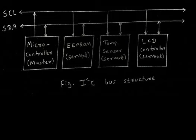I2C bus has two communication lines. One is serial data (SDA) line and the second is serial clock (SCL) line.